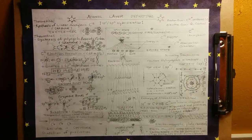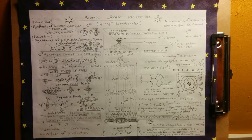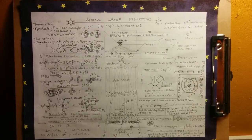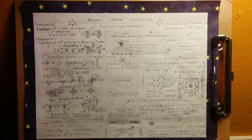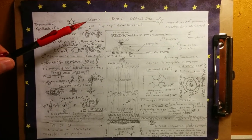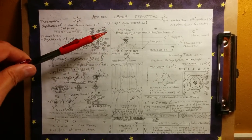Welcome to Theoretical Synthesis of Linear Acetylidic Carbon, SP1 Hybridization, Carbine, and Theoretical Synthesis of Polycyclic Aromatic Carbon, SP2 Hybridization, Graphene. Here we go through the processes of atomic layer deposition, SP1 and SP2 hybridization.